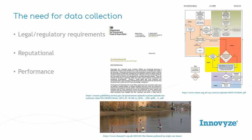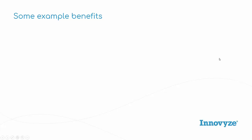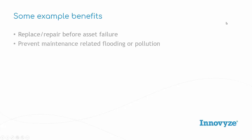There are many more reasons for data collection, but I wanted to give a few examples and move on to some of the example benefits we can derive. When I say data, I'm not talking necessarily just about live data, telemetry data, or sensor data, but also inspections, surveys, and that kind of information. Replacing and repairing before asset failure is one of the key ones. If you carry out regular inspections and CCTV surveys, they may pick up on assets that are structurally not as sound as they were, or potential failure in the near-term future, and replacing or repairing those assets is one of the key benefits.